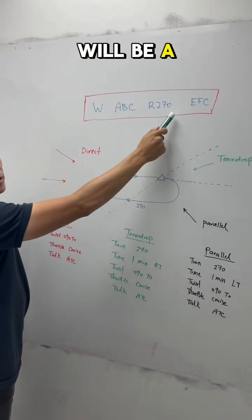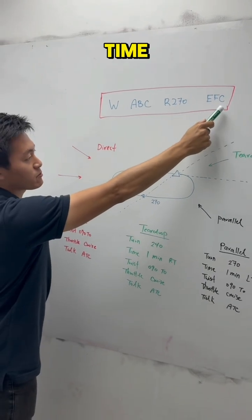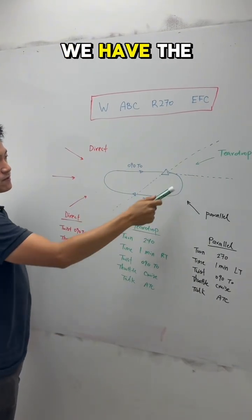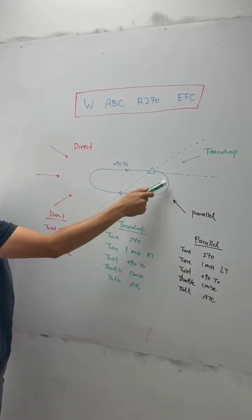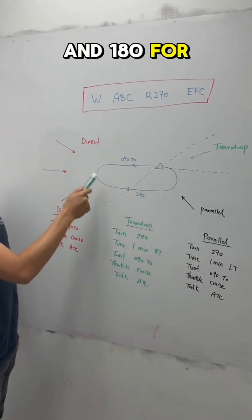If it doesn't specify left turn, it will be a right turn with the expected further clearance time provided by the ATC. So we'll have three sections for the entry: 70 degrees for the teardrop, 110 degrees for the parallel, and 180 for the direct entry.